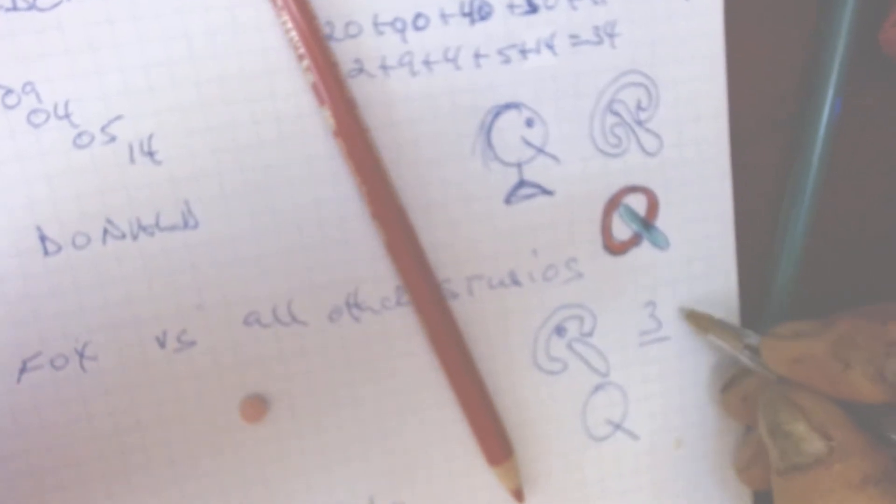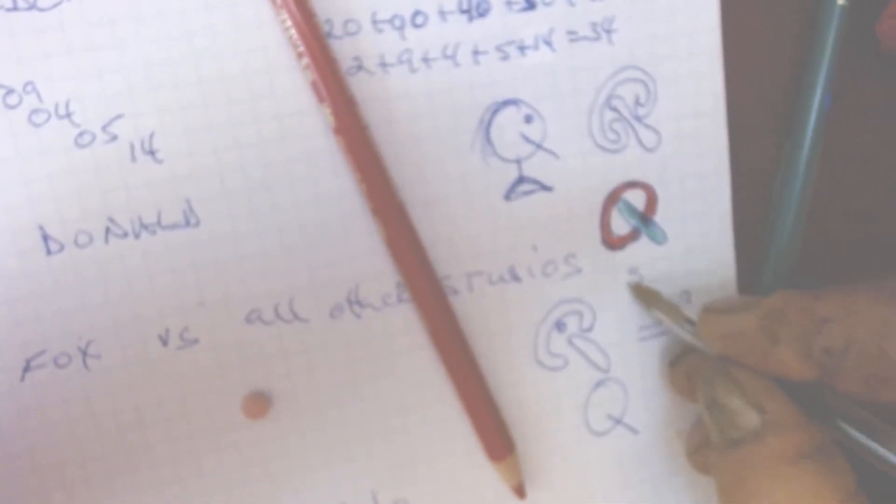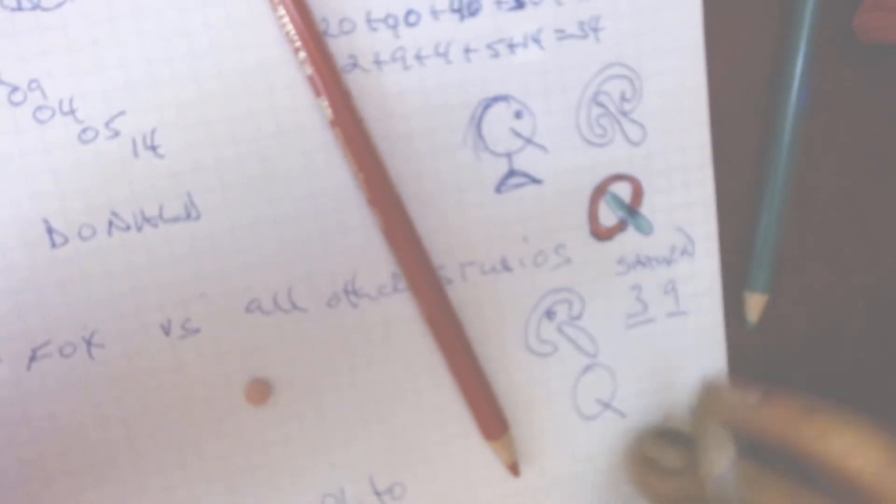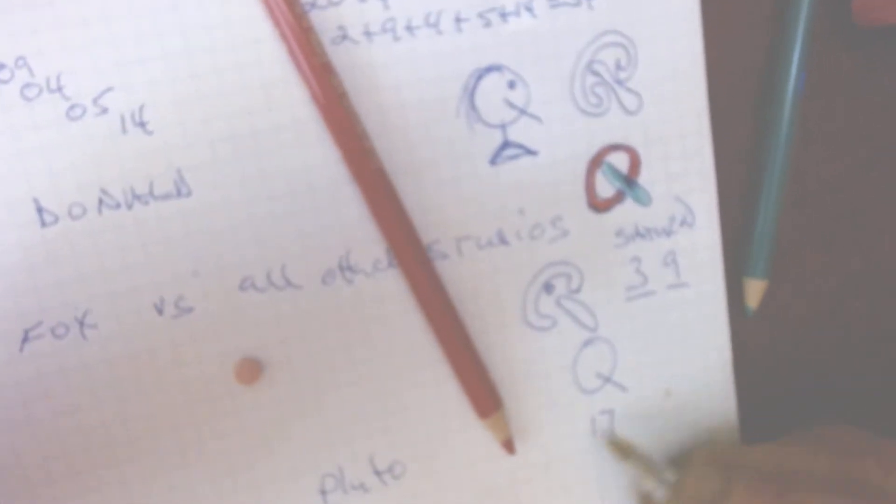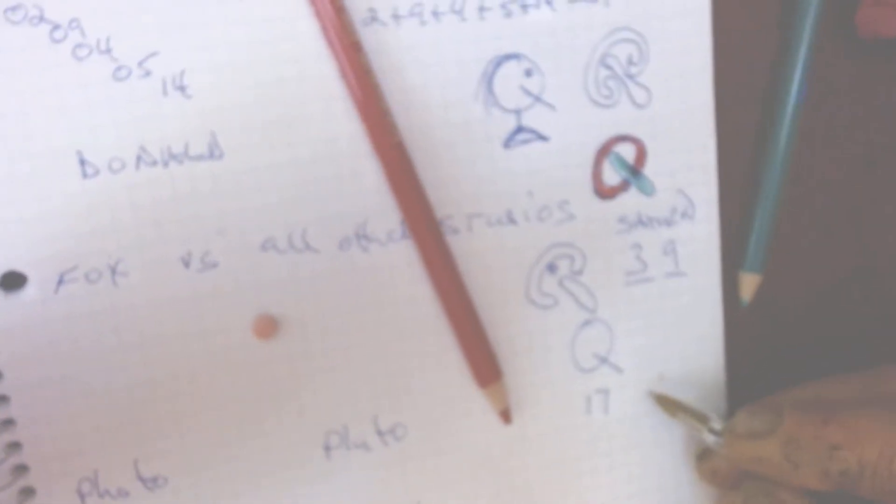So the third letter and the ninth letter which is Saturn. The Q is the 17th letter. And when you have the Q as the 17th letter according to the French.